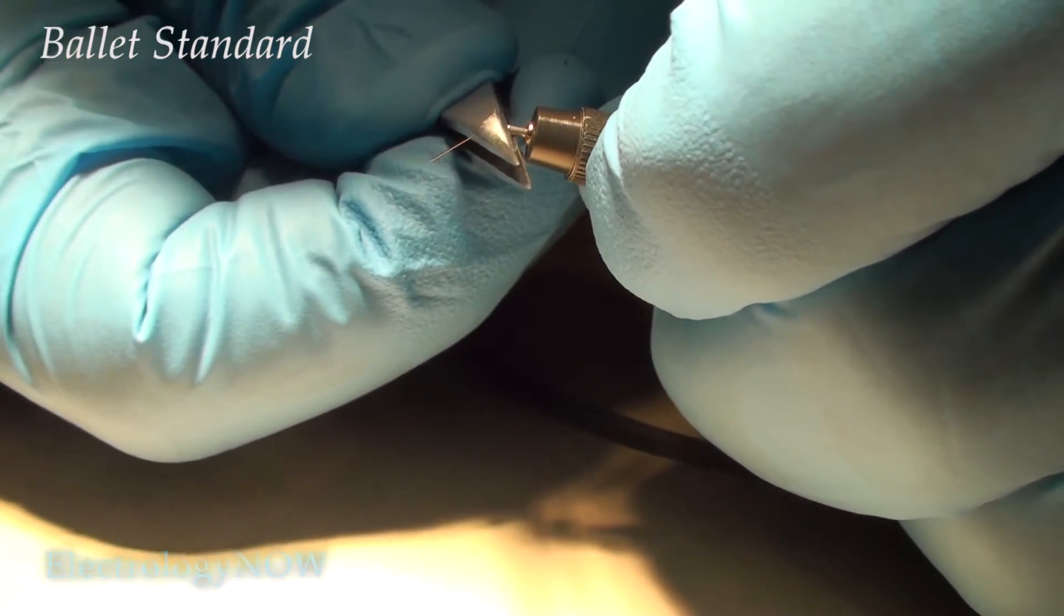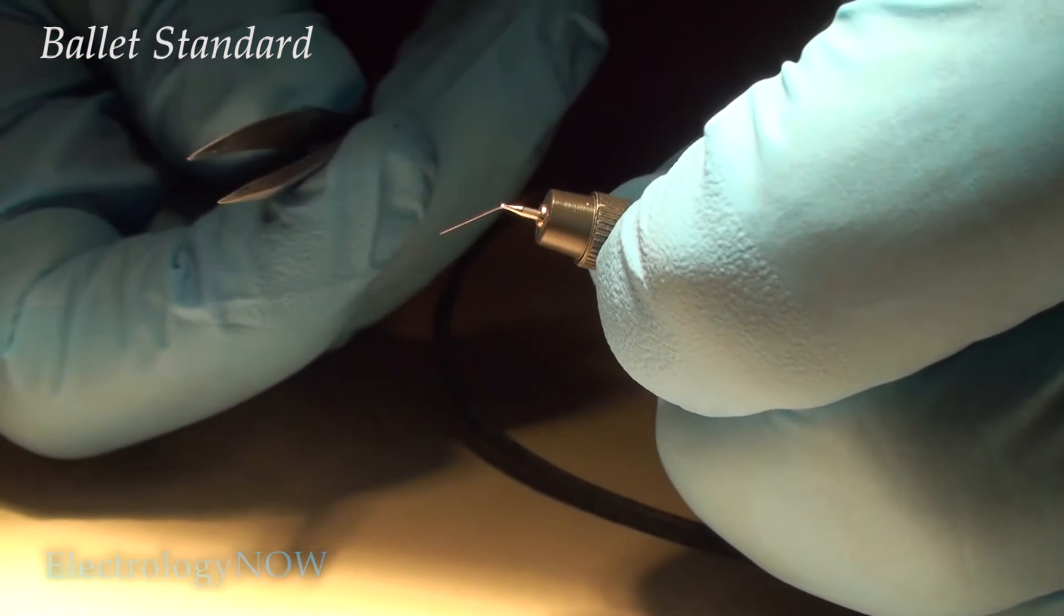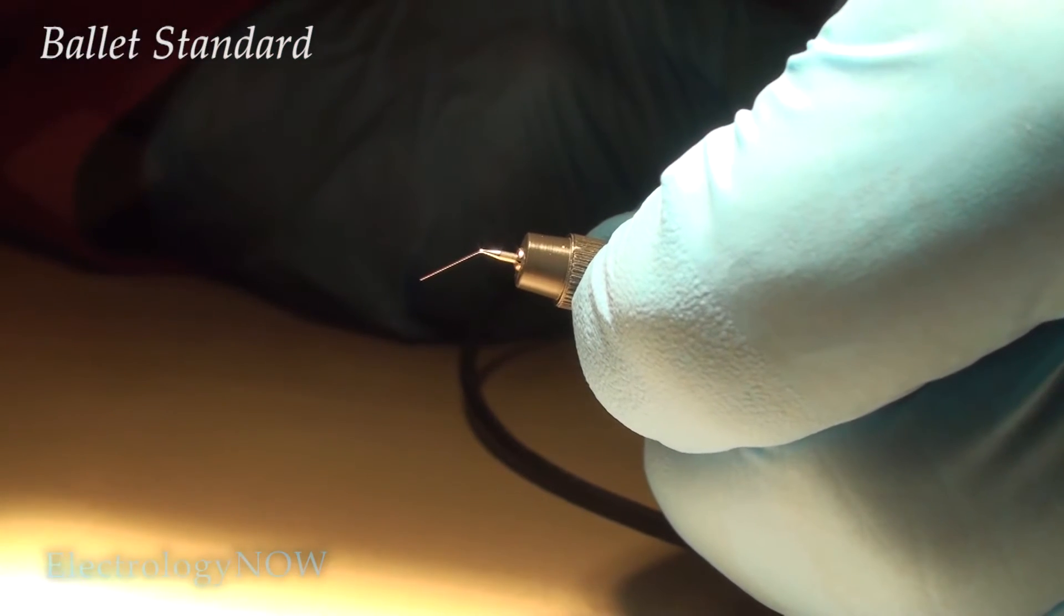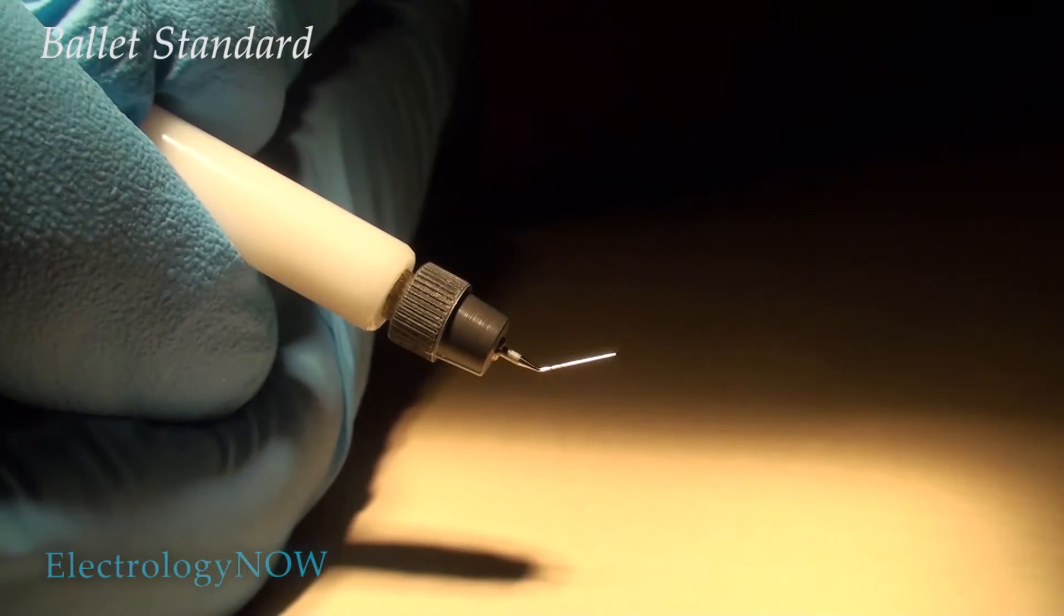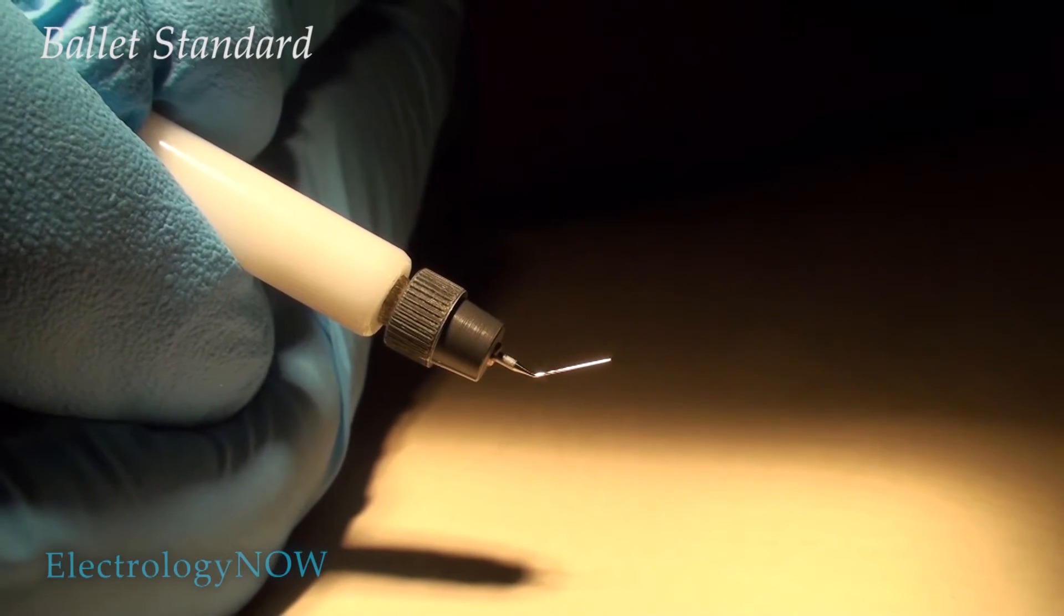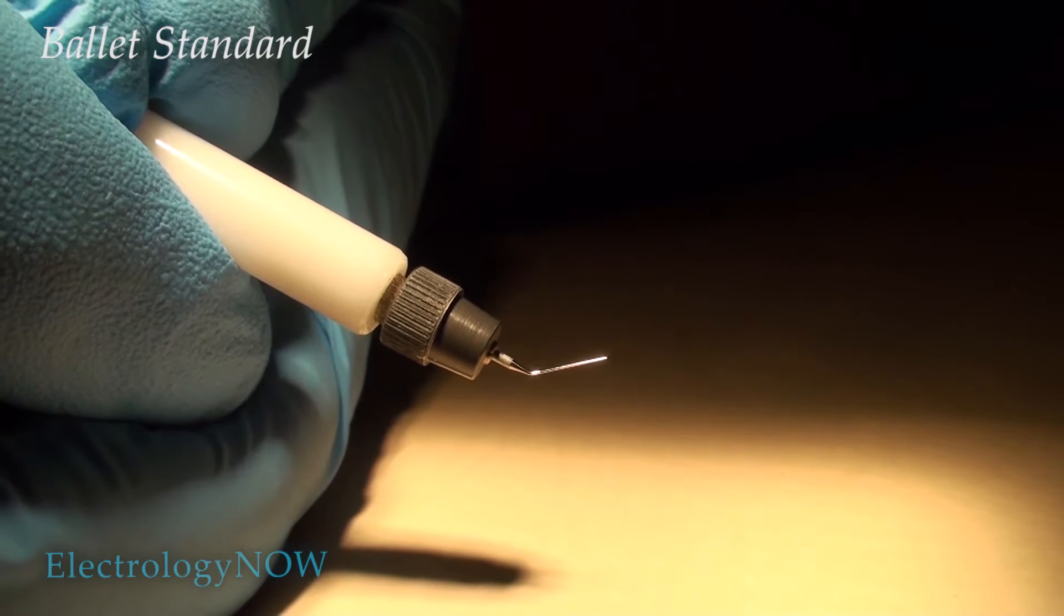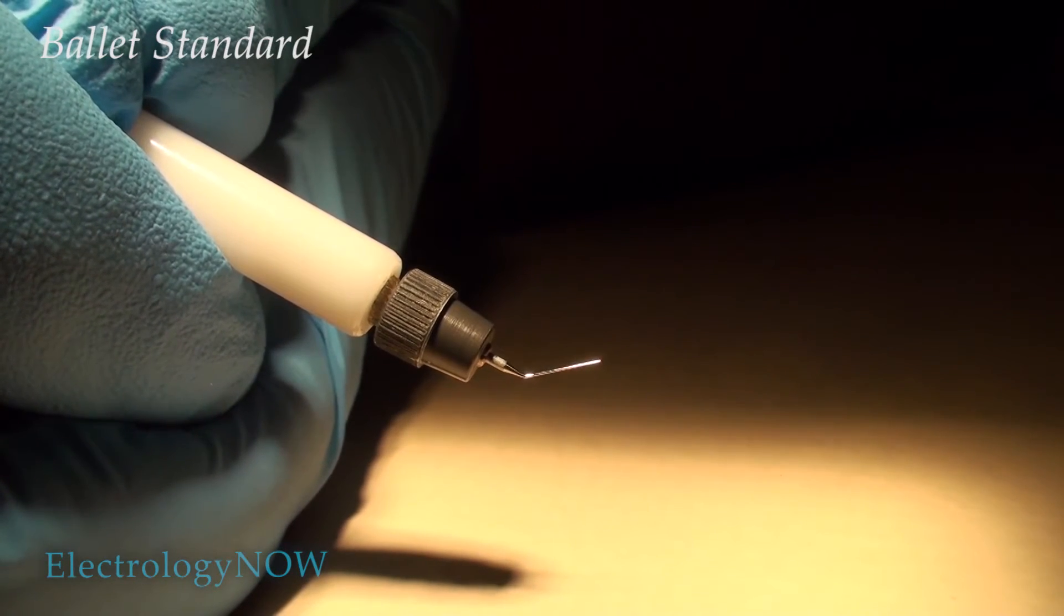This does shorten the working end of the needle, but for the most part, unless you're working on really big hairs, this will be fine. Here's your standard K-5 Ballet needle that's been bent, and you'll be using it in this position most of the time.